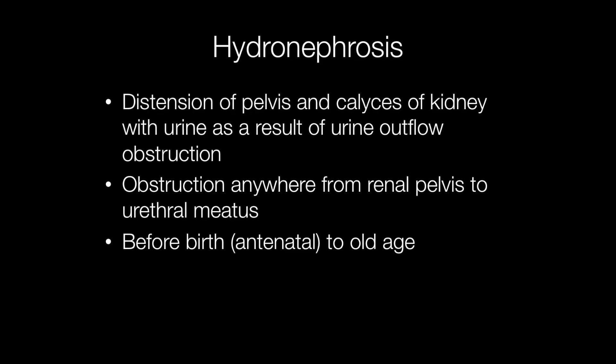Hydronephrosis is distention of the renal pelvis and calyces of the kidney with urine as a result of urine outflow obstruction. The obstruction can occur anywhere from the renal pelvis to the urethral meatus, which is the very end of the urethra.